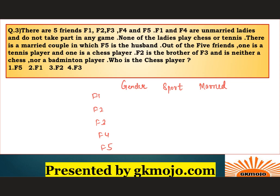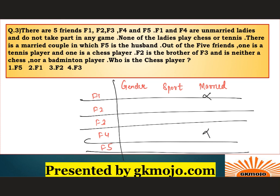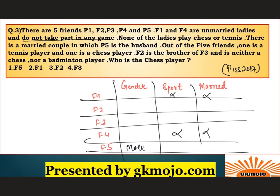F1 and F4 are unmarried ladies — mark them as female and unmarried. Since they do not take part in any game, mark sports as 'no' for both. None of the ladies play chess or tennis. F5 is the husband, so F5 is male. There is one married couple, and F2 is the brother of F3, so F2 is male. F2 is neither a chess nor a badminton player.